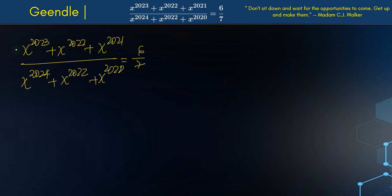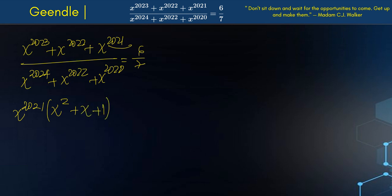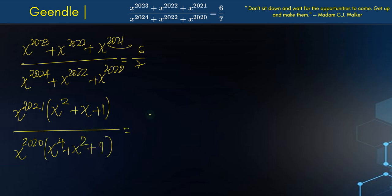I'm going to simplify this by writing the smallest power both in the numerator and denominator. The smallest one in the numerator is x to the 2021, so we factor that out to get x to the 2021 times (x squared plus x plus 1). The smallest in the denominator is x to the 2020, giving us x to the 2020 times (x to the 4 plus x squared plus 1), and this equals 6 over 7.